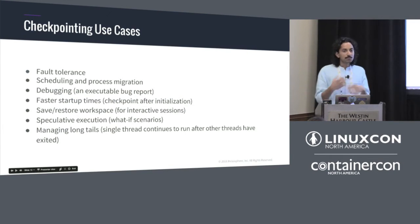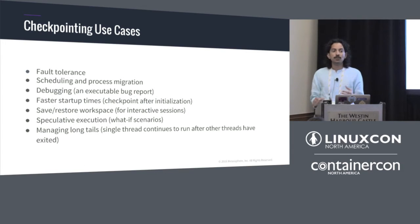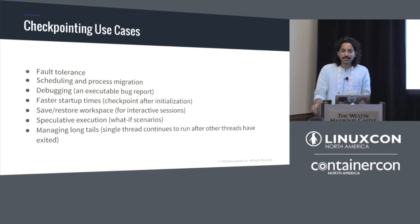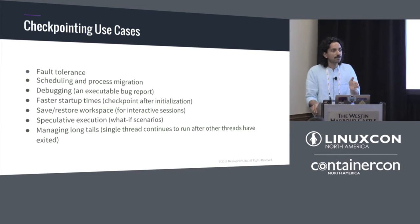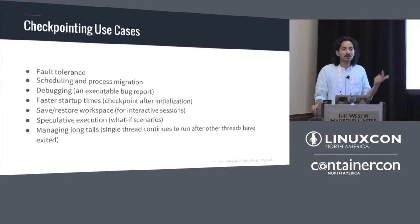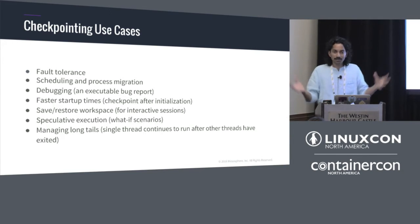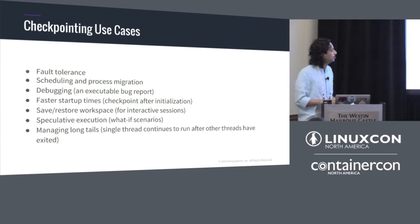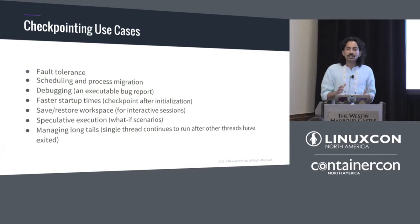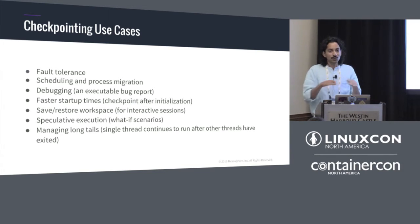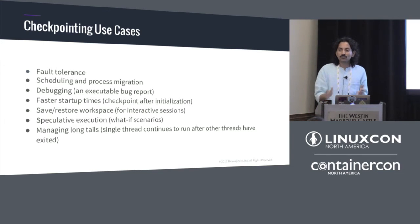Going over some quick use cases for checkpointing. Traditionally, checkpointing has been used in the HPC world where things are really compute-intensive — losing even an hour of compute time is bad when running on thousands of nodes. Losing one CPU hour means losing 10,000 CPU hours from your quota. Fault tolerance was the original use case: if your application is running on 1,000 nodes and one goes down, you take snapshots so you can restart from the previous one.